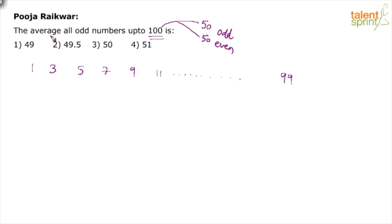You also know that finding out the average of consecutive numbers is very easy. You don't have to do 1 plus 3 plus 5 plus 7 plus 9 and so on up to 99 divided by 50. That is not needed.